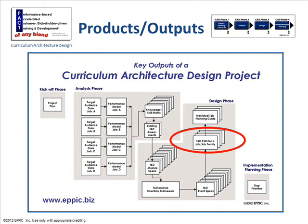Moving to part two: the outputs. While there are many outputs for the four phases, the key ones are a project plan, target audience data, performance data, knowledge and skill data, and an assessment of all existing content so we can reuse it as-is or after modification. We don't want to reinvent any wheels — that's not good stewardship of shareholder equity.